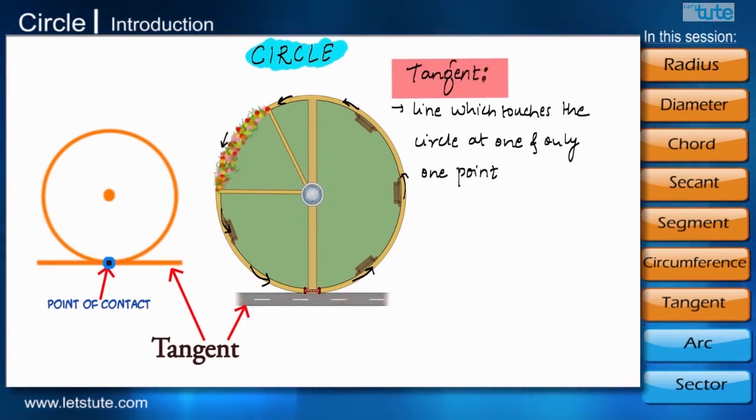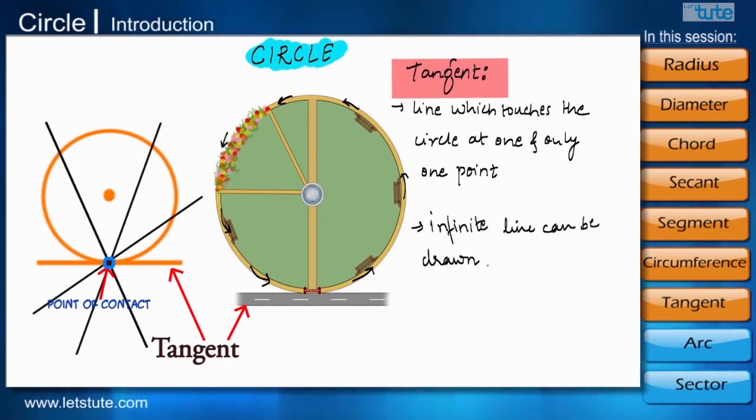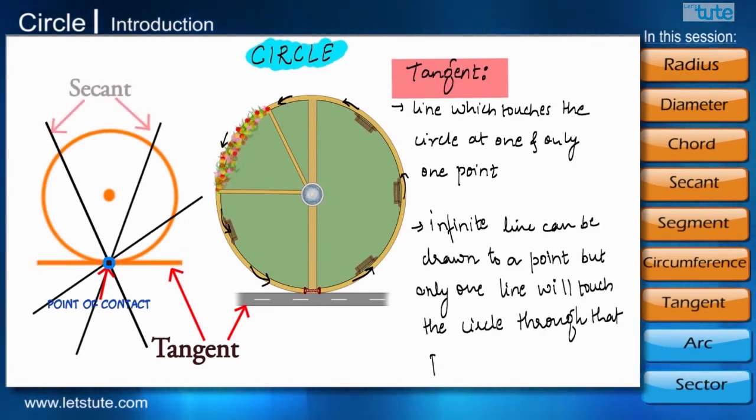However, they can be infinite lines that can be drawn to a point on the circle. But, there is only one line that touches the circle through that point.